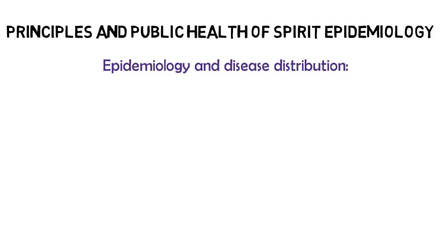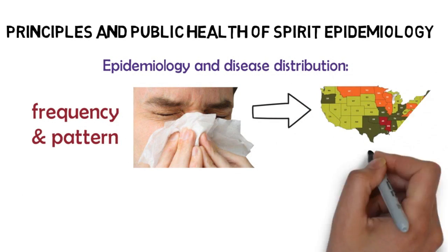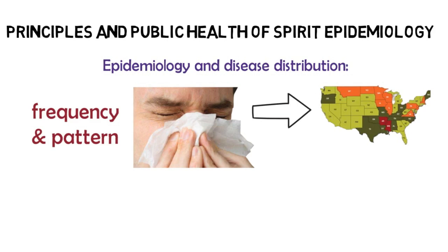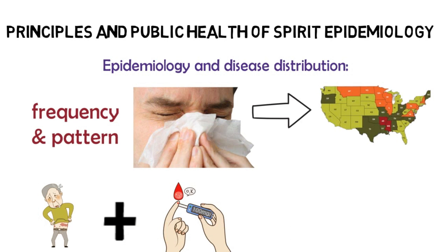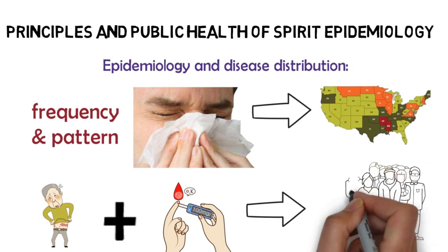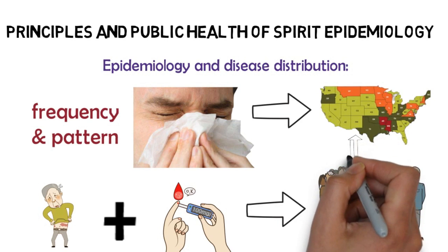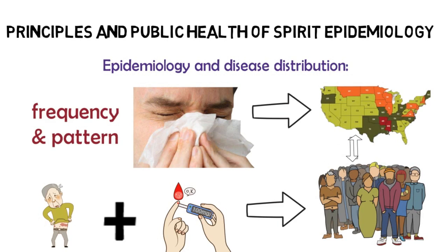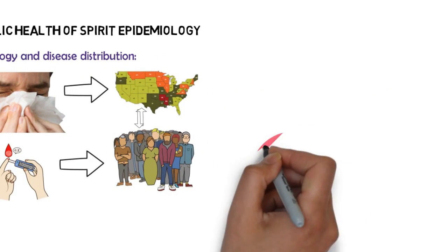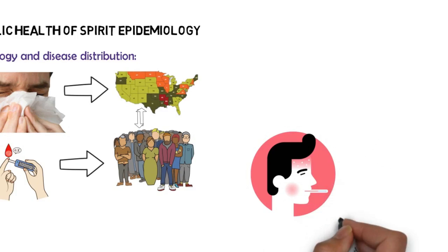On disease distribution: epidemiology is concerned with the frequency and pattern of health events in a population. Frequency refers not only to the number of health events — such as the number of cases of meningitis or diabetes in the population — but also to the relationship of that number to the size of the population. The resulting rate allows epidemiologists to compare disease occurrence across different populations.